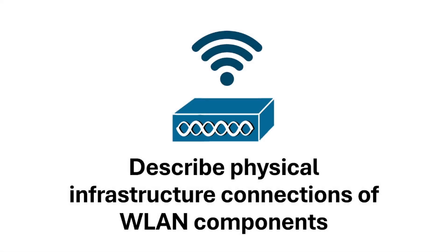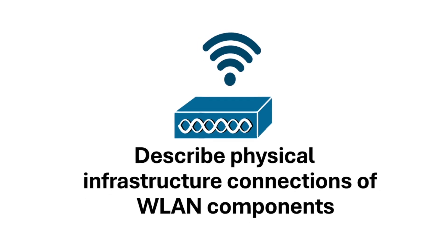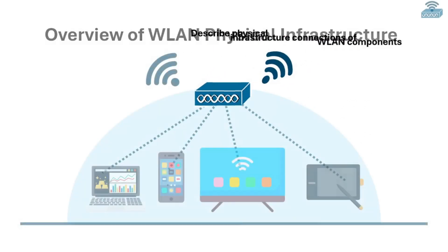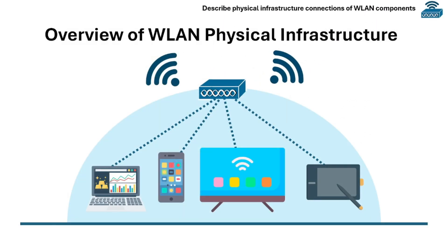Section 2.7 is about the physical infrastructure connections of wireless LAN components. Let's get started with the overview of the wireless LAN physical infrastructure.